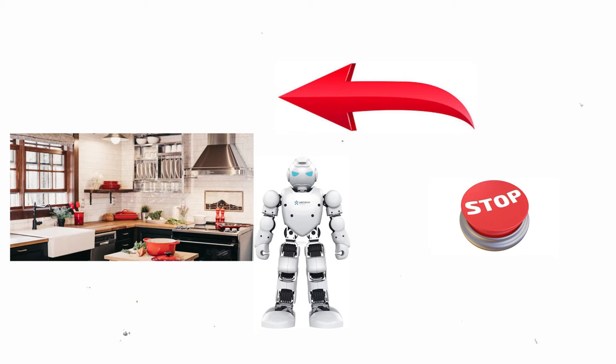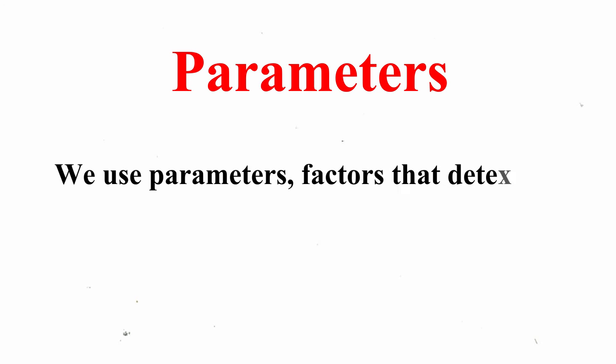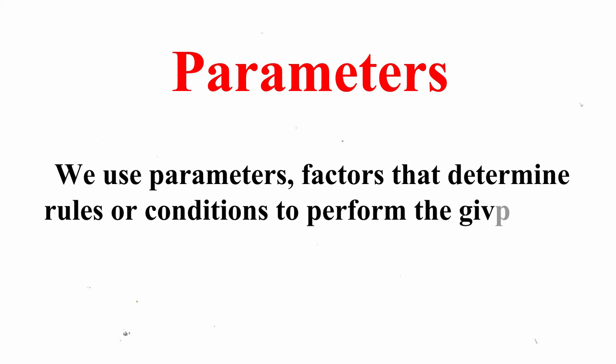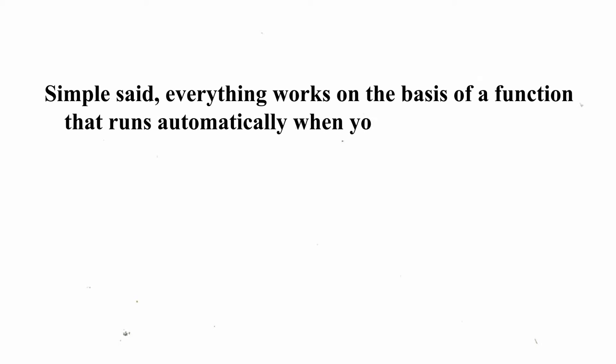But the robot won't let you push the button because of the mission — and the reward is to make you a cup of tea. We use parameters, factors that determine rules or conditions to perform the given task, before we can create a computer, robot, or even a human performing a job. Simply said, everything works on the basis of a function that runs automatically when you begin a program.